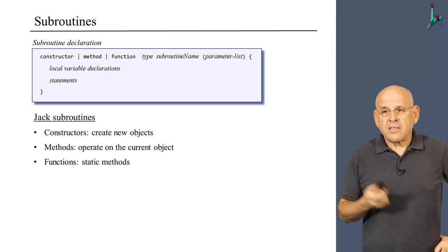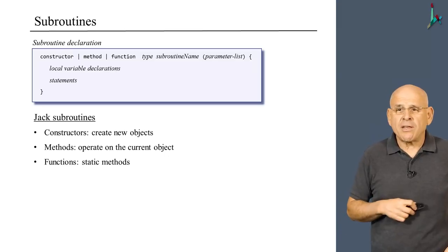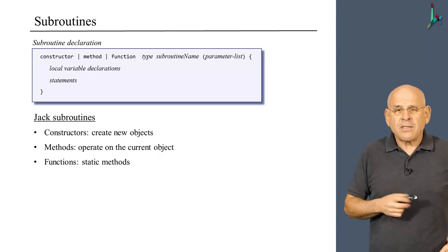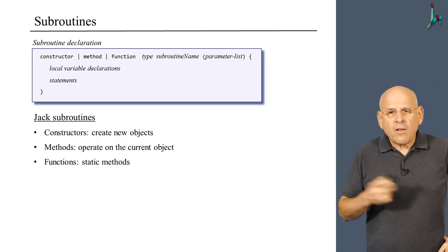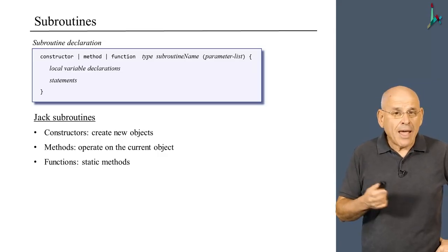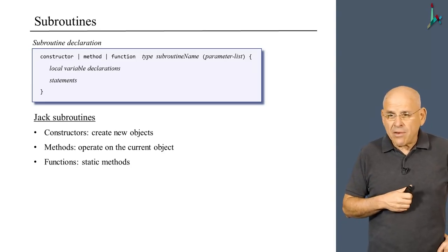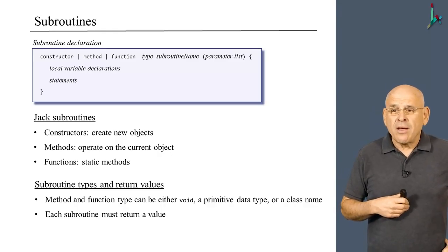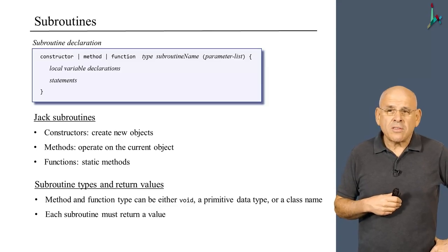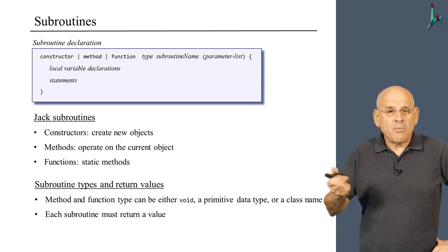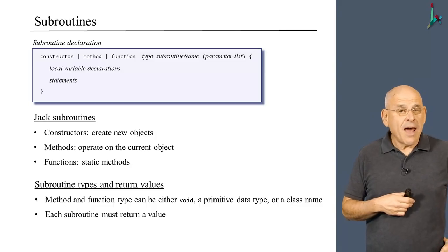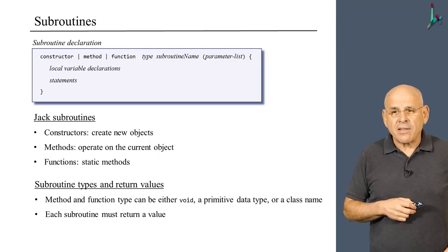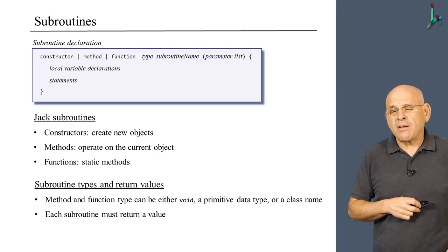Constructors are designed to create new objects, methods operate on the current object, and functions are similar to C functions in that they don't understand what an object is. All these subroutines must be typed and must return a value. A void subroutine must say return at the end, essentially returning null. So you can think about return as a shorthand for return null.